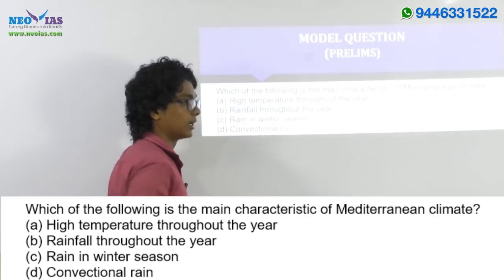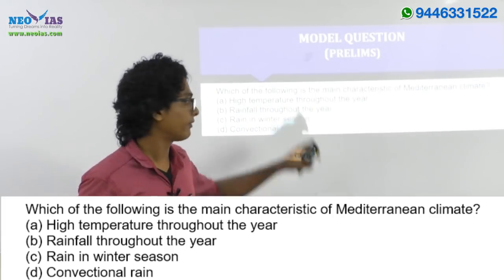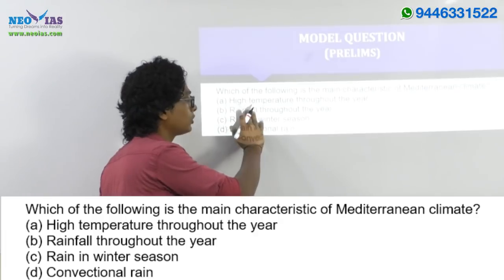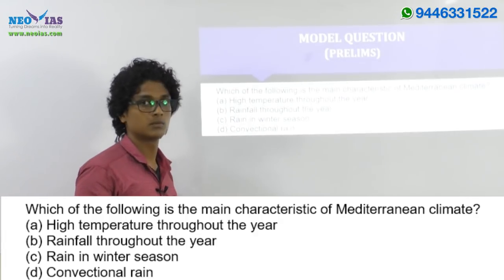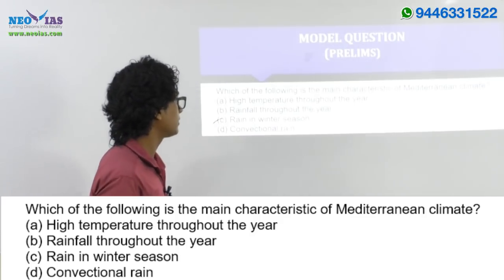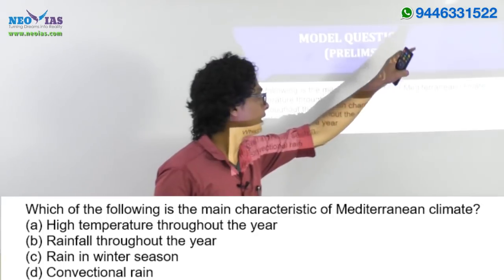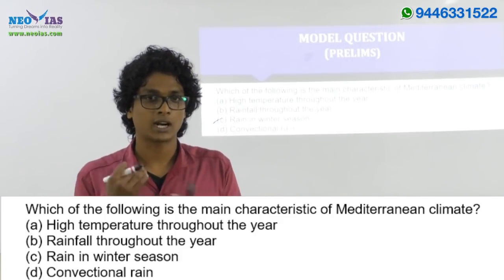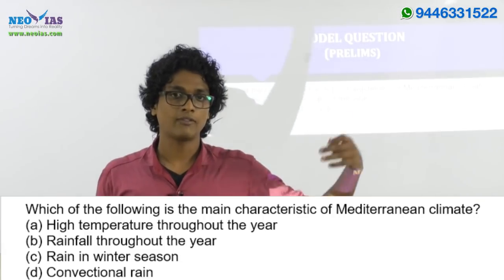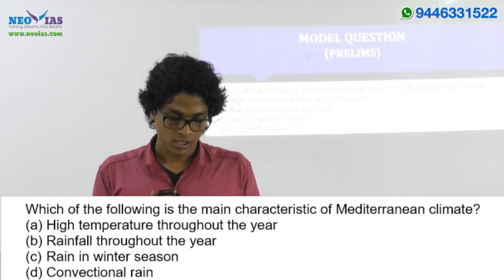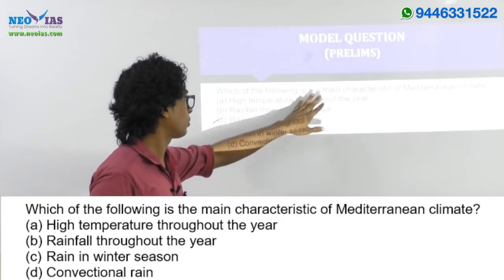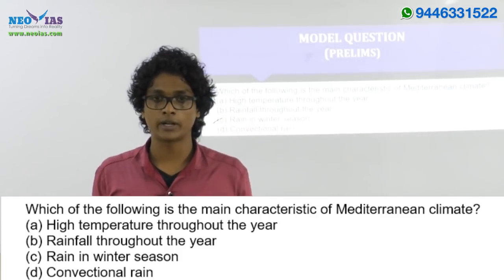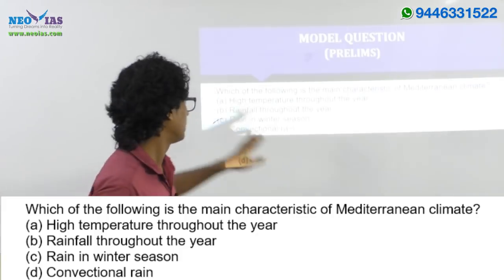The second option, rainfall throughout the year, is again a property of equatorial climate — if you have uniform temperature throughout the year, you will have rainfall throughout the year. The third option, rain in the winter season, is the correct answer — it is the characteristic property of Mediterranean climate. The fourth option, convectional rain, is not exactly related with Mediterranean rainfall. High temperature throughout the year, rainfall throughout the year, and convectional rain are all properties of the equatorial type of climate. The characteristic feature of Mediterranean type is winter rainfall.